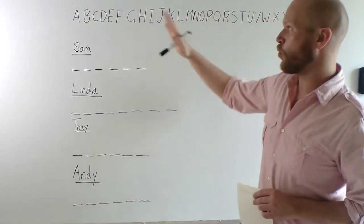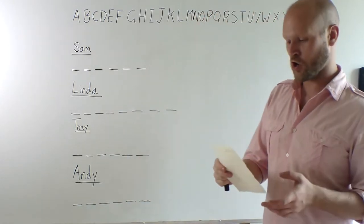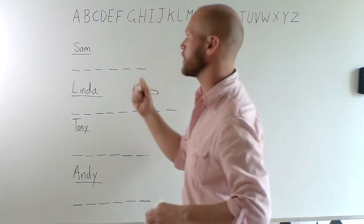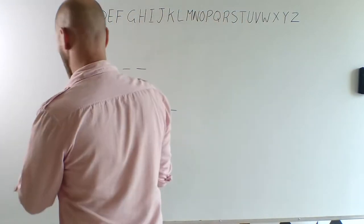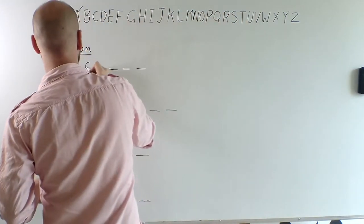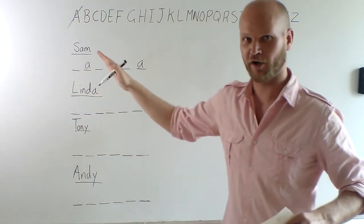The first student can choose one letter. For example, Sam chooses letter A. So we score out A. Sam has two A's, so you should not have chosen A, okay?